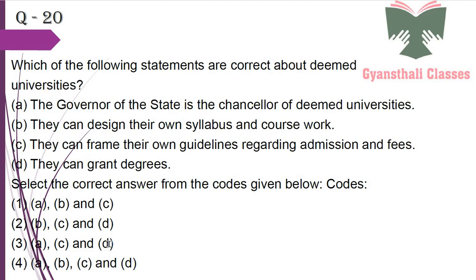Next question: Which of the following statements are correct about deemed universities? The Governor of the state is the chancellor of deemed university — no; they can design their own syllabi and coursework — yes; they can frame their own guidelines regarding admission and fees — yes; they can grant degrees — yes. The answer is B, C and D.